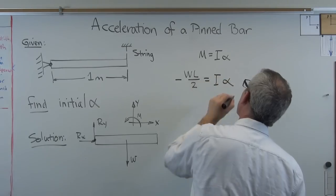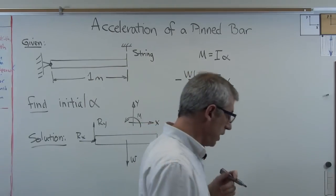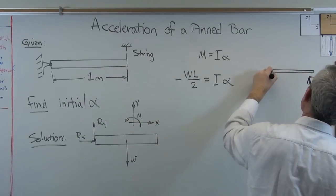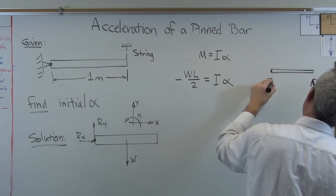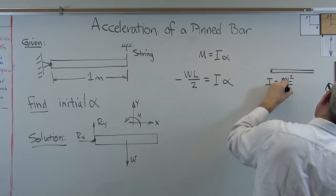Equals I alpha. Well, what's I? We're not going to be able to solve this until we know what I is. Well, for a bar, you can look this up. Right there, I about that end point is mL squared over 3.